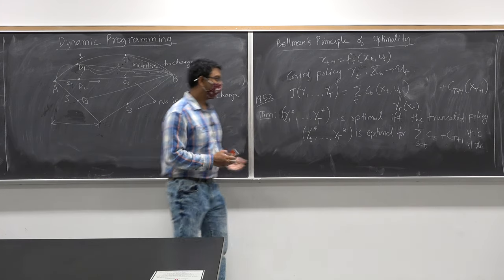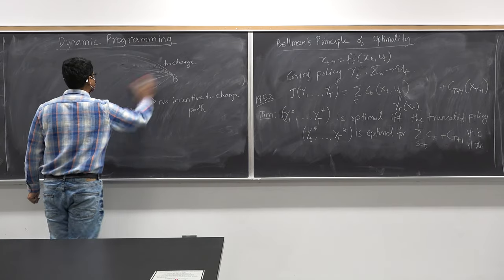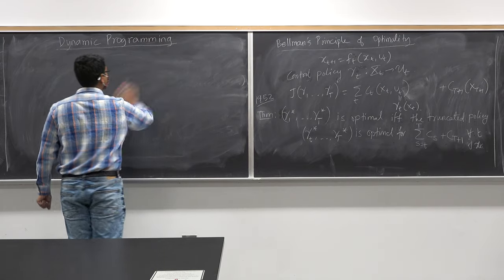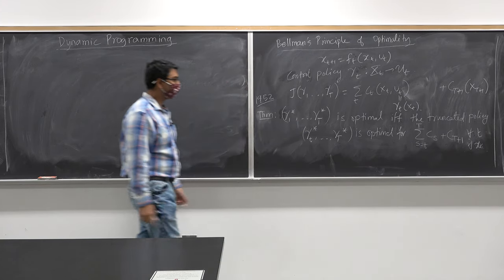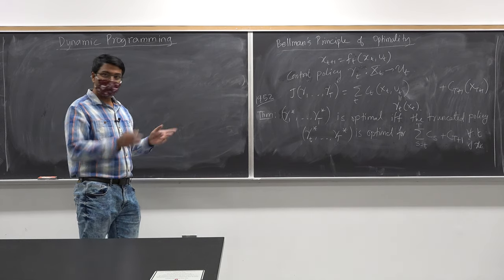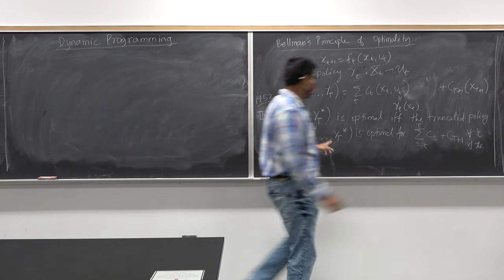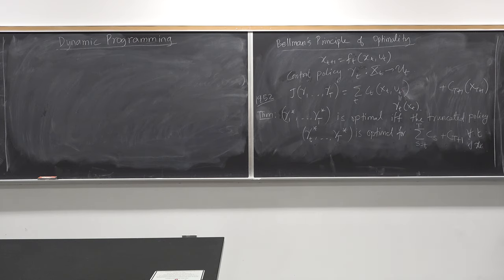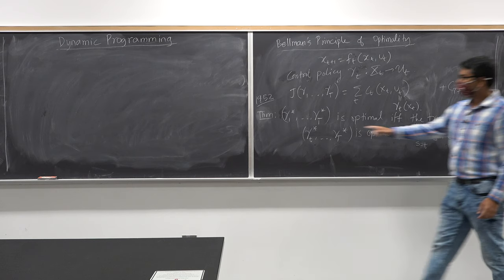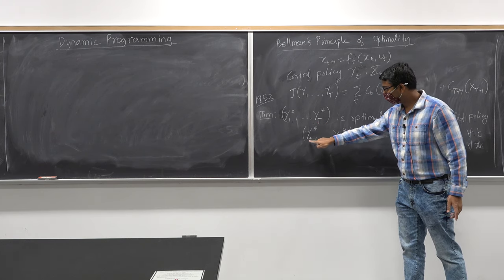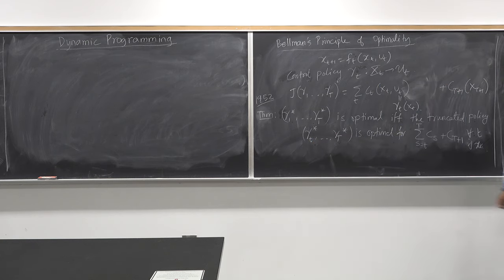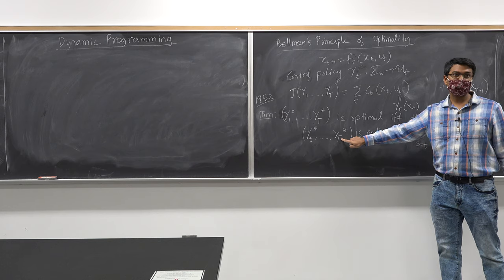Now let's dissect this theorem. I am interested in computing the optimal strategy or optimal policy. I have an algorithmic technique: I find the optimal truncated policy. How? I can pick small t to be equal to capital T and just focus on computing γ*_T, which is optimal for c_T plus c_{T+1}. Let's compute γ*_T first.